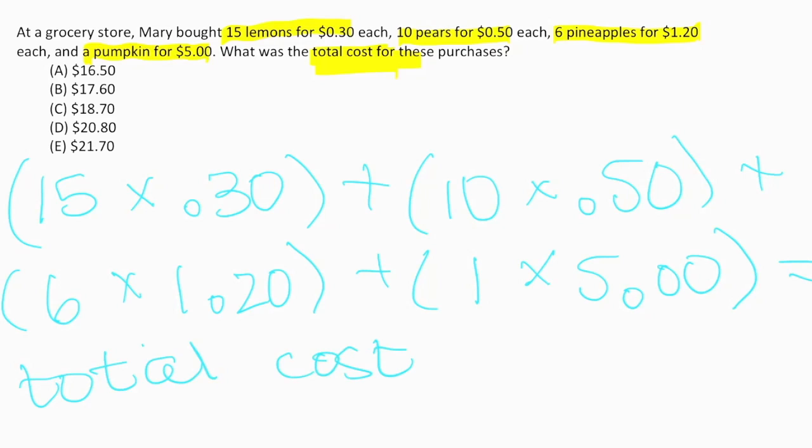We'll plug that into our calculator, making sure we do the multiplication before the addition. That's why I put them in parentheses. When we do that, we get our answer, which is $21.70. If we go back to our answer choices, we can see that letter E is the correct answer. The total cost for these purchases was $21.70.